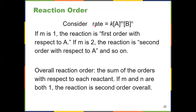Let's talk about what these orders mean and how we determine them. Rate is equal to K times [A]^m times [B]^n. We're typically thinking of these as positive integers, and the most common ones are one and two. If m is one, the reaction is first order with respect to A. If m is two, the reaction is second order with respect to A. If n is two, the reaction is second order with respect to B. That's how we describe these things — you have an order with respect to each reactant.